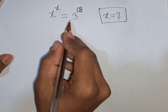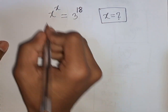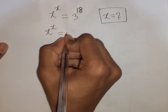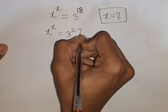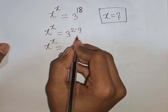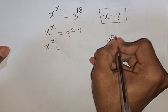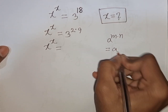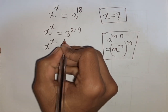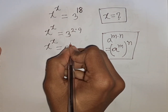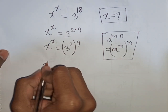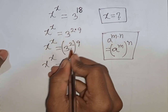How to solve x power x is equal to 3 power of 18 — find the value of x. We have x power x is equal to 3 power of 18, which can be written as 3 power of 2 times 9. Now we apply the exponential rule that a power of m times n is equal to a power m bracket power n, so we can write here 3 power 2 bracket power of 9.